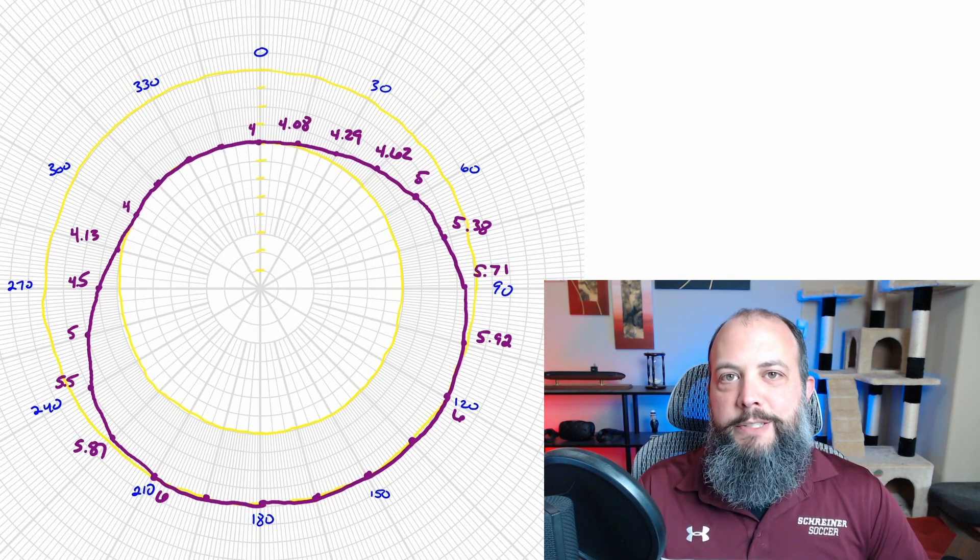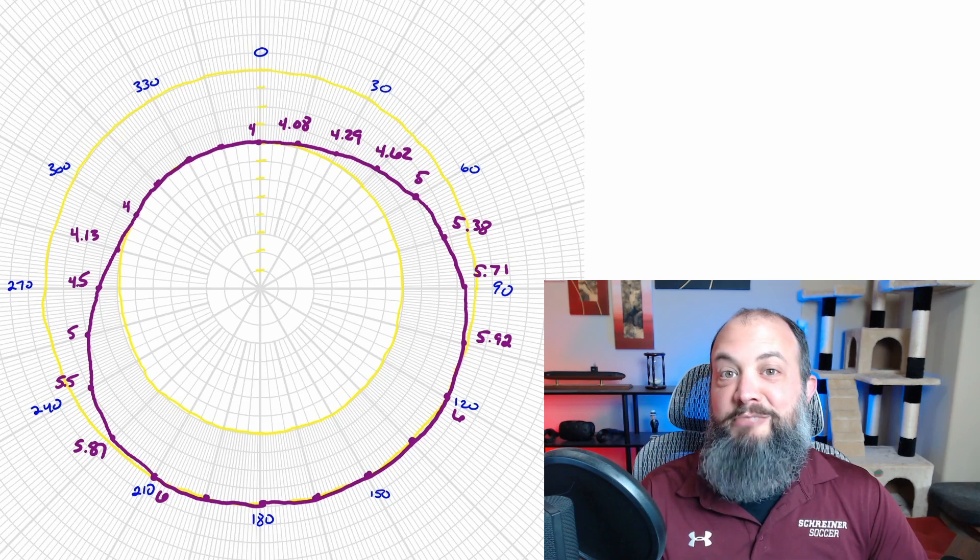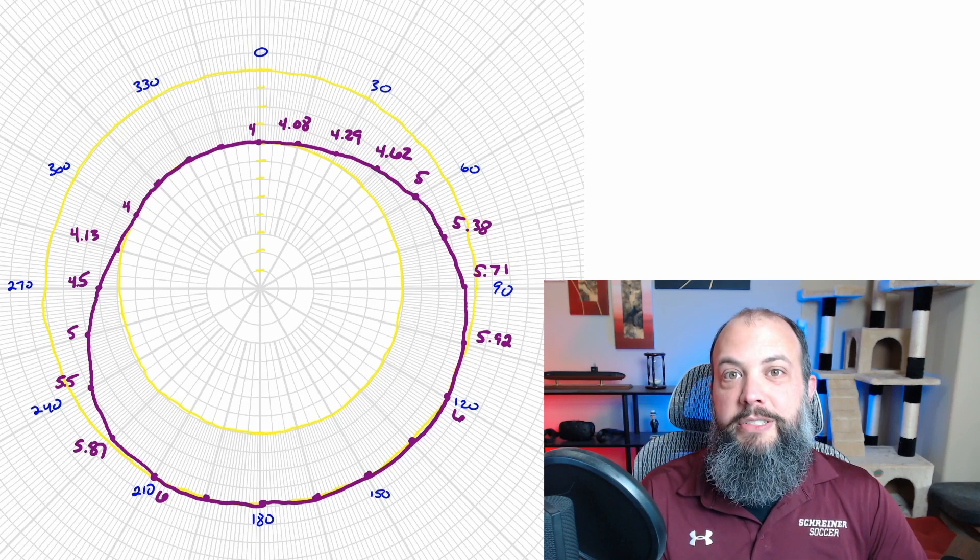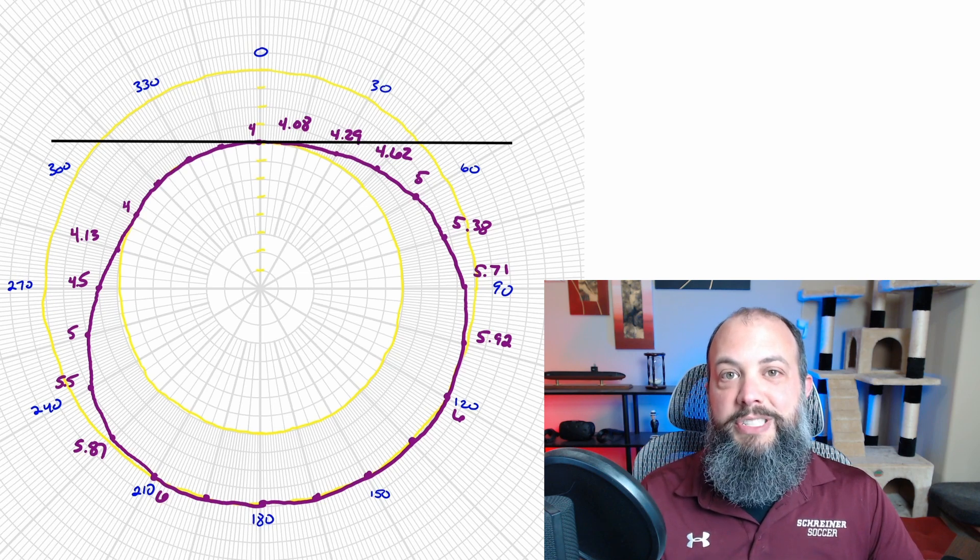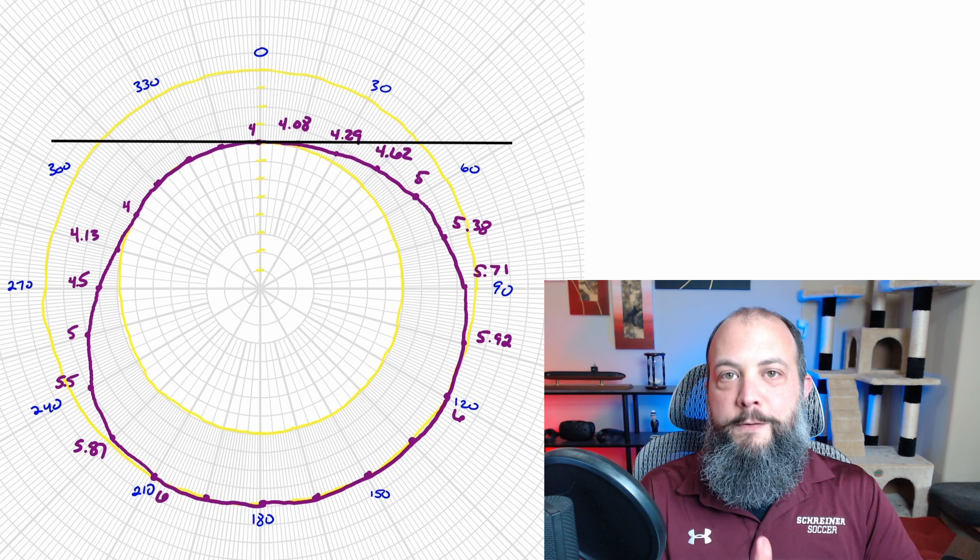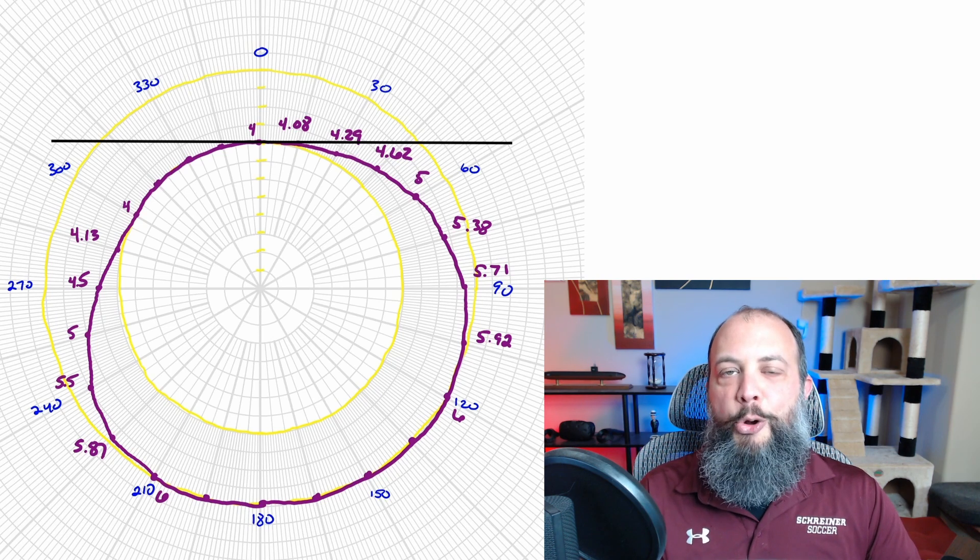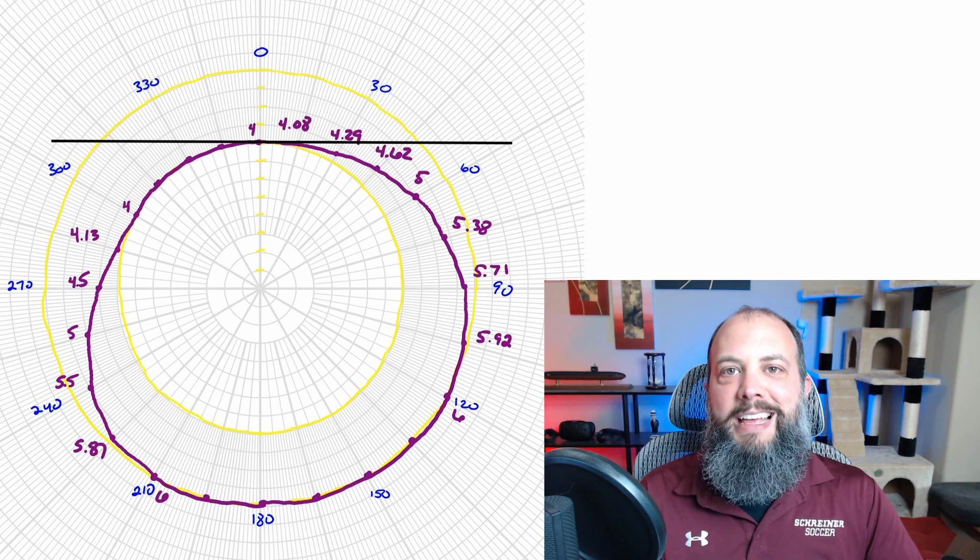All right, now lastly, a flat face follower, and this one's probably easier to draw than the roller follower, but not nearly as easy as the knife edge was. A flat face follower is done essentially by cutting lines across your system. You know, at zero degrees, there's going to be a minimum height of four, but you don't know exactly where that point is. So you give yourself a horizontal line all the way across at that height of four.